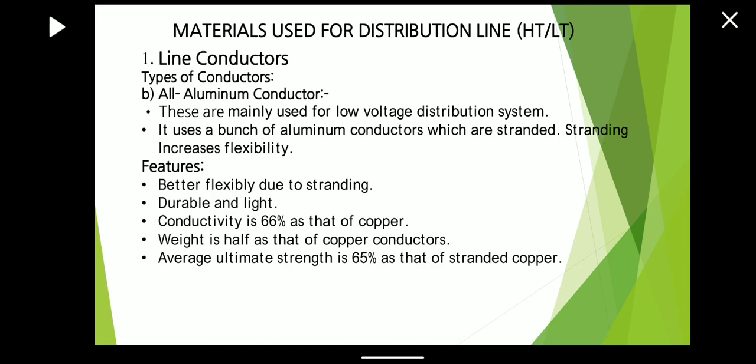The second type of conductor is the All Aluminium Conductor, also called AAC. These are mainly used for the low voltage distribution system. It uses a bunch of aluminium conductors which are stranded. Stranding increases flexibility. Features of AAC: better flexibility due to stranding, durable and light. Conductivity is 66% that of copper. Weight is half that of the copper conductor. Average ultimate strength is 65% that of stranded copper.